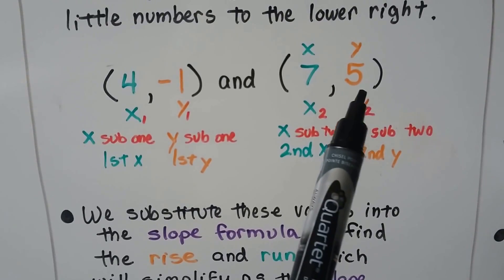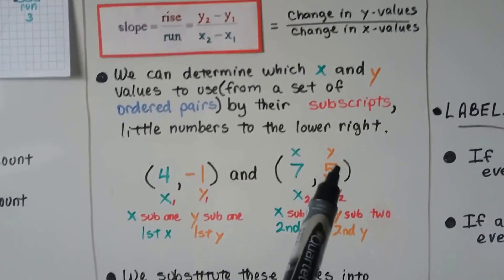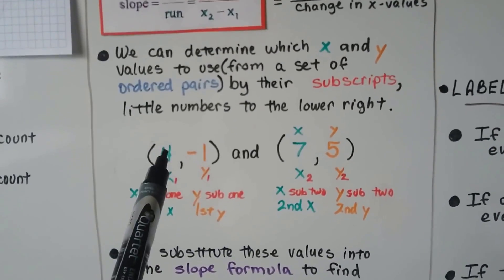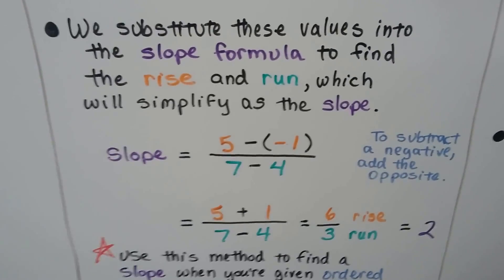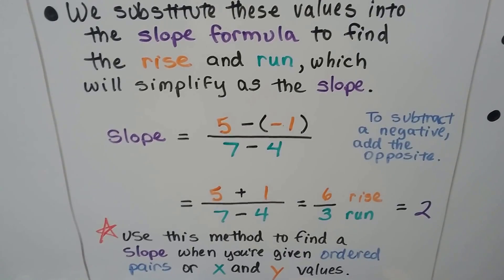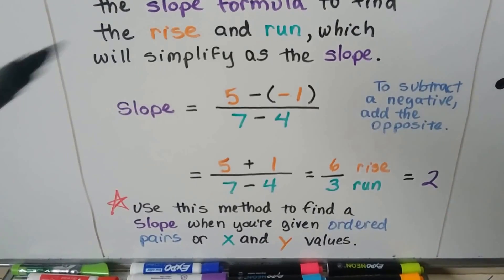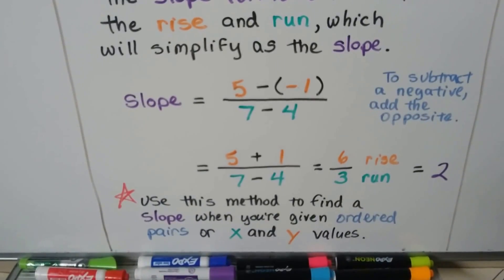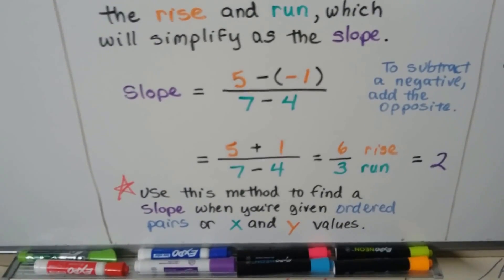So because we have to do y sub 2 minus y sub 1, we're going to do 5 minus a negative 1. Then we're going to do 7 minus 4. We substitute these values into the slope formula to find the rise and the run, which will simplify as the slope. So 5 minus a negative 1, remember we're going to add the opposite when we subtract a negative, so we're going to have 5 plus a positive 1. That's the opposite of negative 1. That means we have 5 plus 1. That's a 6. Then we do 7 minus 4, which is 3. We simplify this and the slope is a 2.